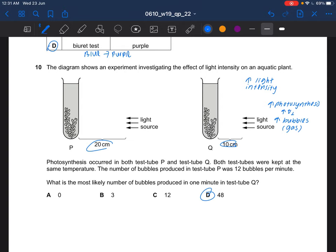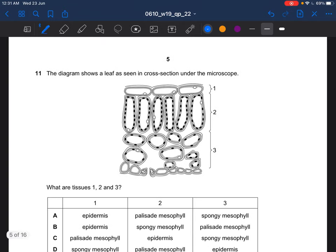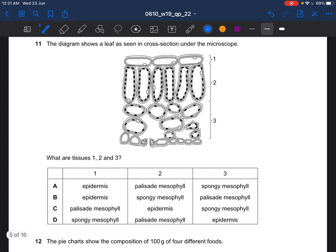Next question. The diagram shows a leaf as seen in cross-section under the microscope. What are tissues 1, 2, and 3? 1 would be your epidermis. 2 would be your palisade. 3 would be your spongy. So the answer would be A.